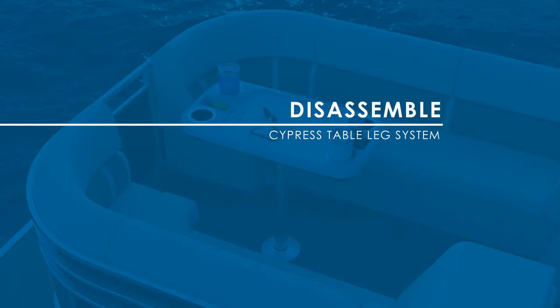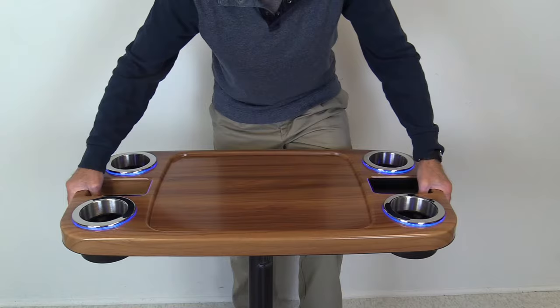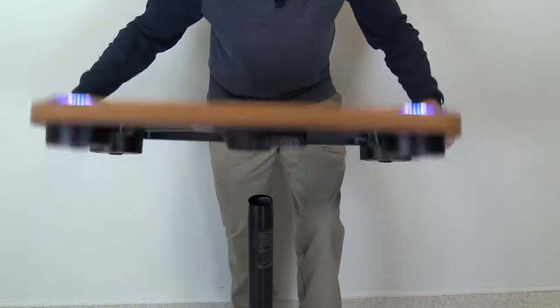To disassemble the table, remove the tabletop by twisting and pulling until the table base pops up.